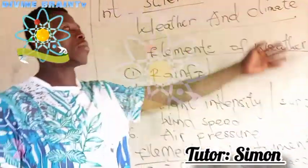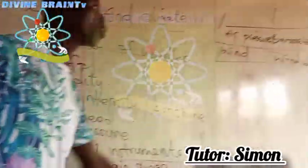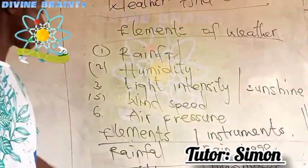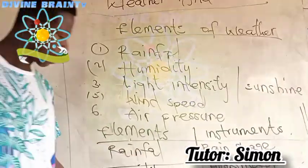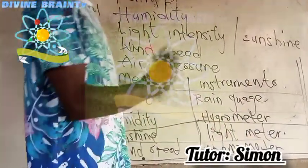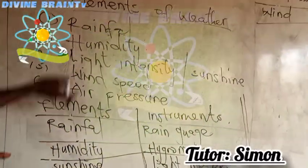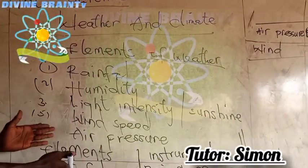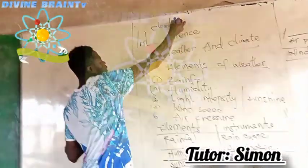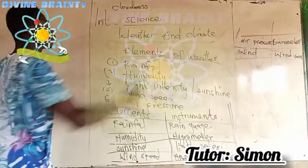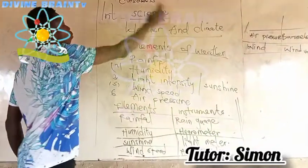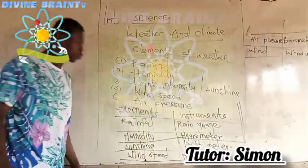So here are the elements of weather and the instruments used to measure them. These are the basic components or basic elements of weather. They can ask you in your exam to name the instruments used to measure the following elements of weather, and you write the answers for them. We also have cloud cover, measured by an instrument called a ceilometer, but that is an additional element.